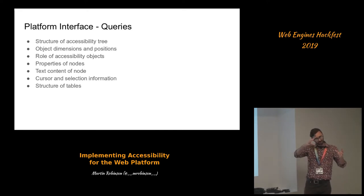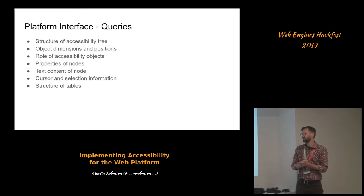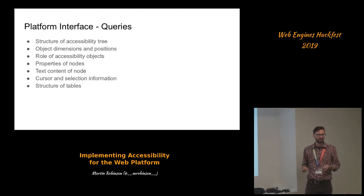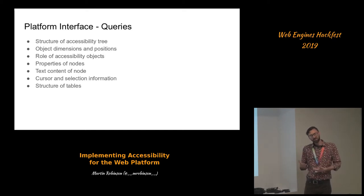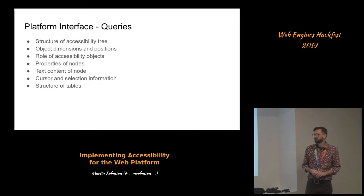Also the dimensions of the objects on the page, which means it also includes information from the painting phase — it's not exactly just the layout tree — and their positions. There's also this idea of the role of accessibility objects, which gets at the conceptual issue where the assistive technology really wants to know not just what the thing is, but why it's there, which makes it easier to explain to the user of the assistive technology.